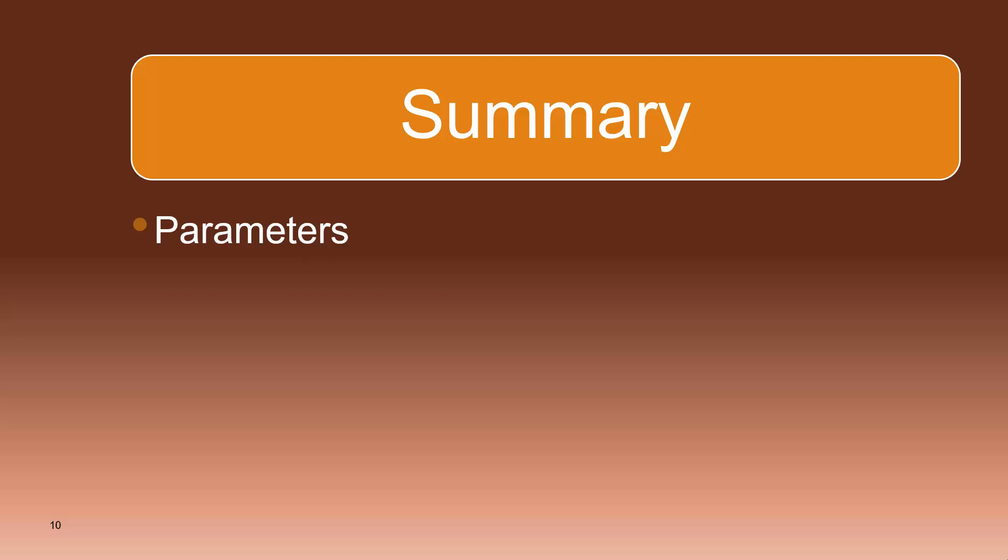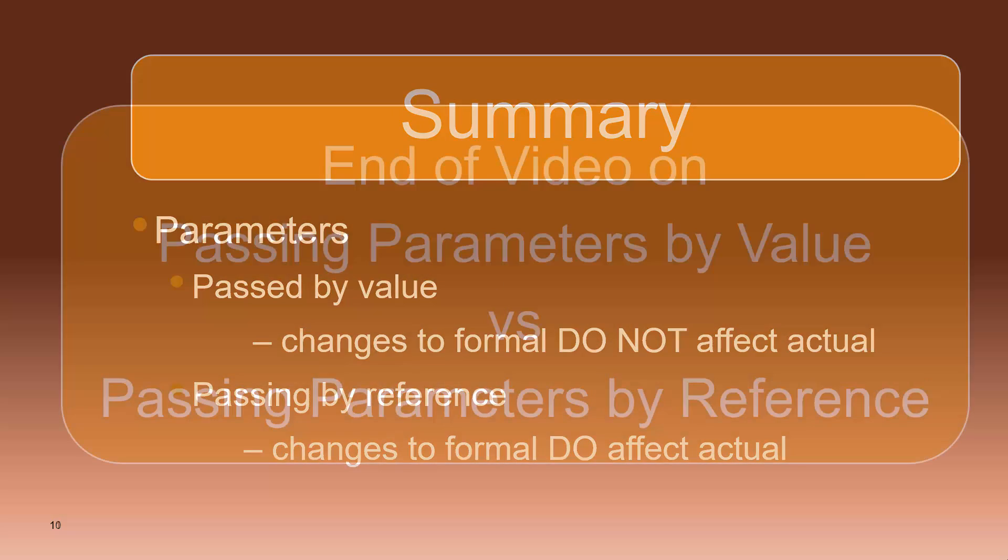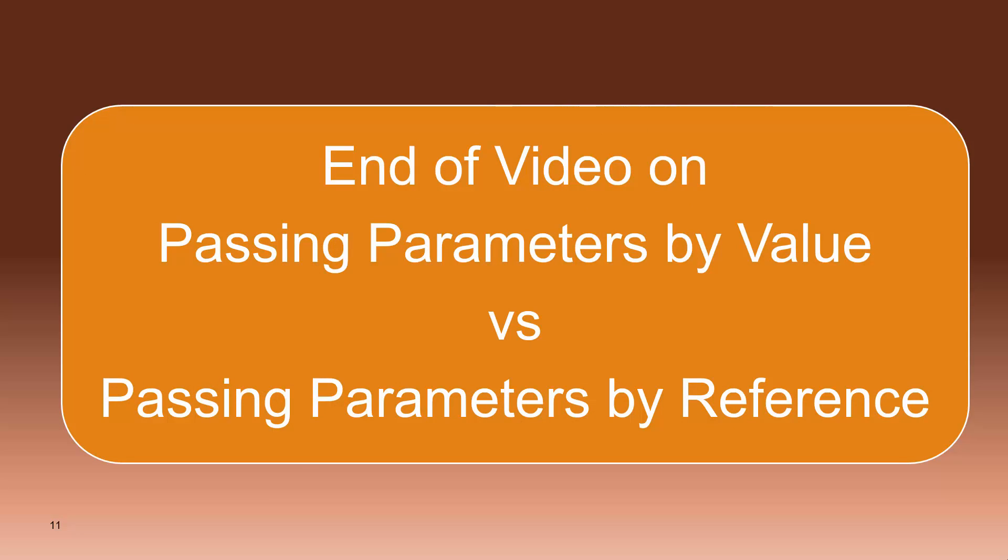In summary, passing by value means that changes made by the formal parameter do not affect the value of the actual parameter. In the situation of passing by reference, changes made by the formal parameter do affect the value of the actual parameter. Be sure and use the other cool learning tools that are available to you to help further explore and better understand this really important distinction.